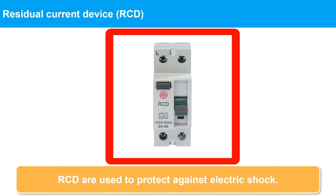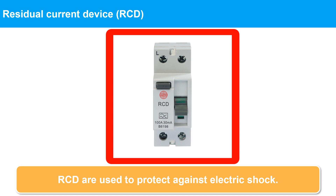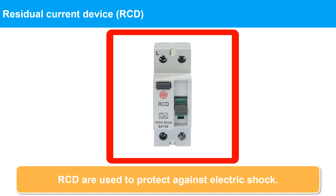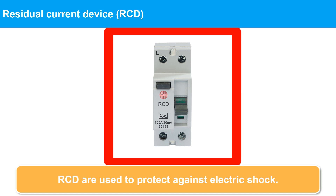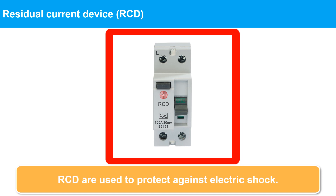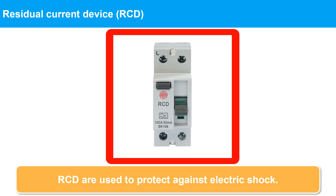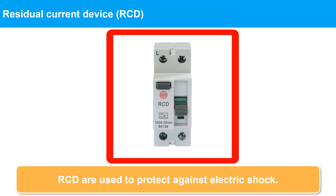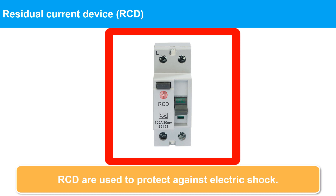A Residual Current Device (RCD) is a safety device used to protect against electric shock. It detects the current imbalance between live and neutral conductors in an electrical circuit and cuts off the electricity supply if necessary. RCDs are commonly used in homes, offices, and other buildings, especially in wet areas like bathrooms and kitchens.